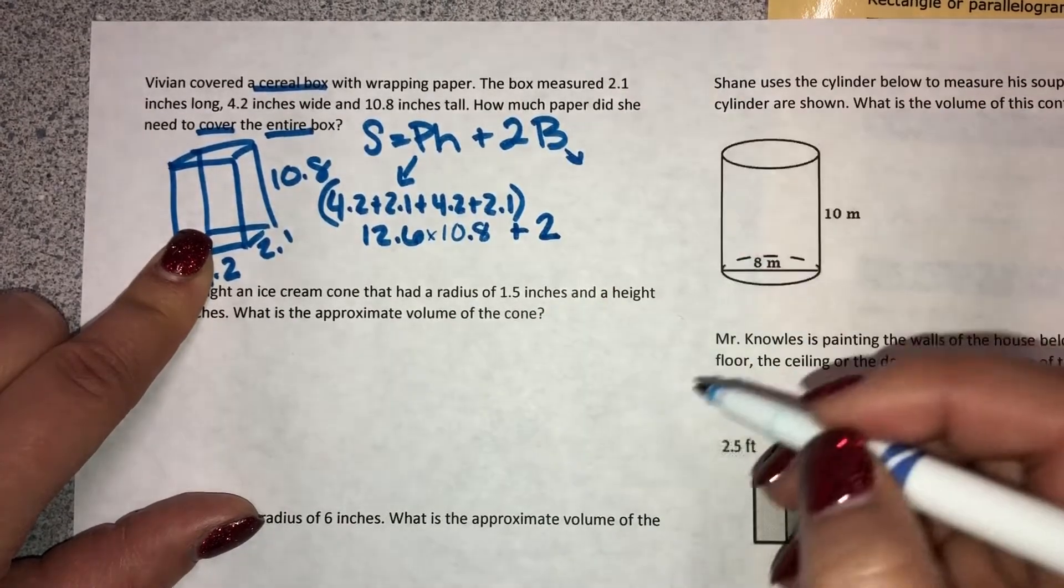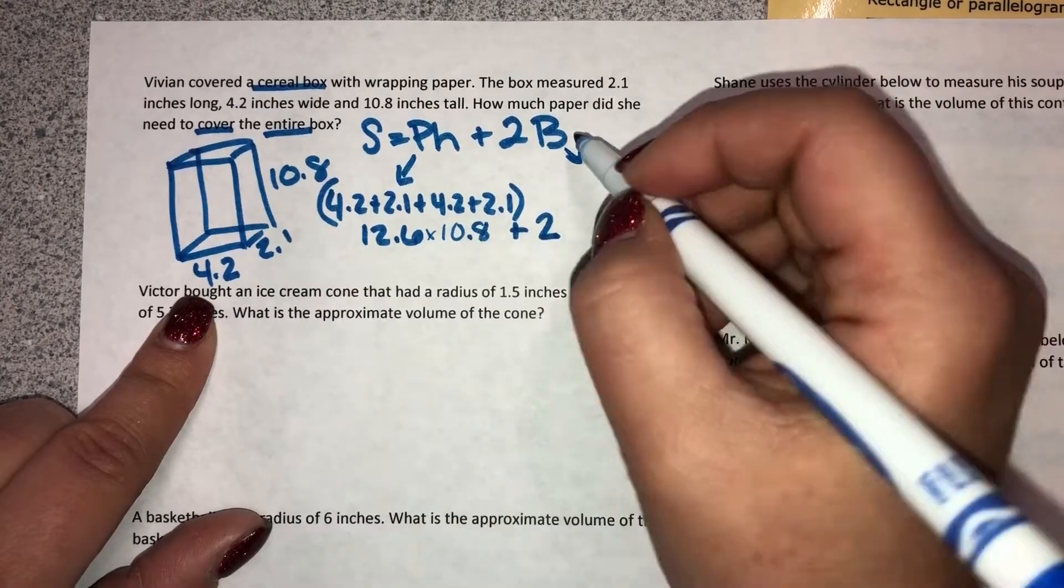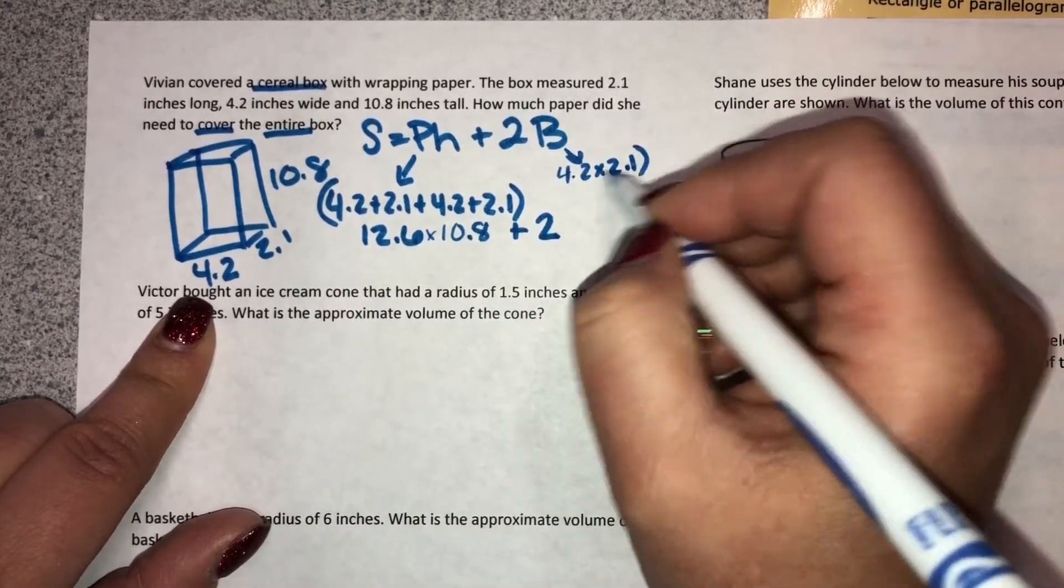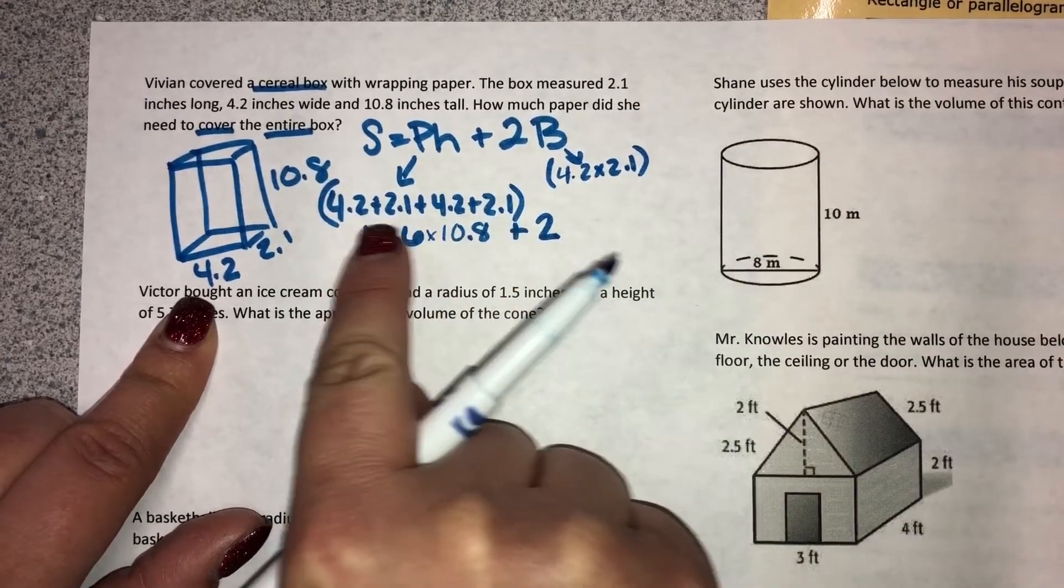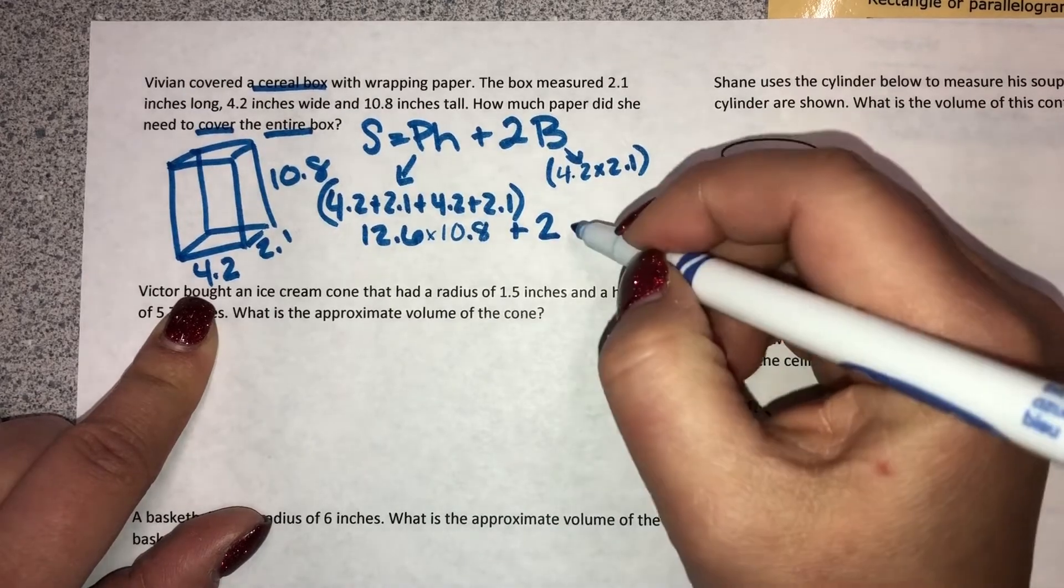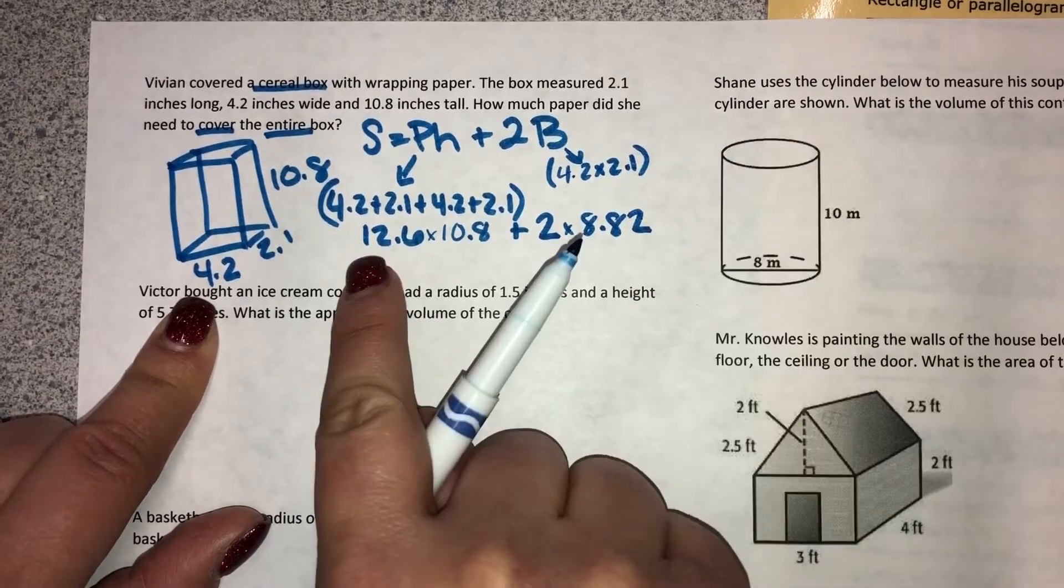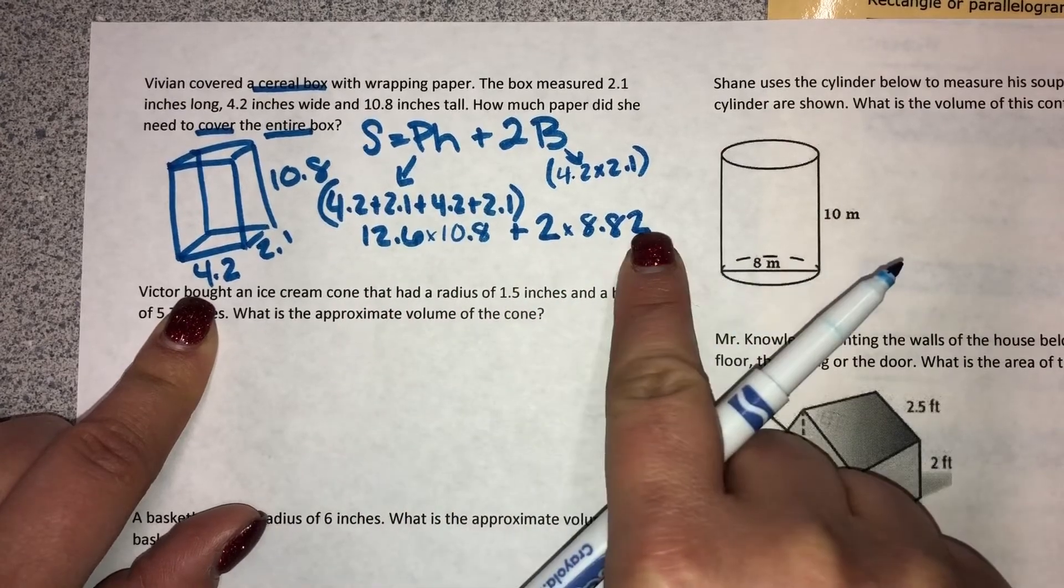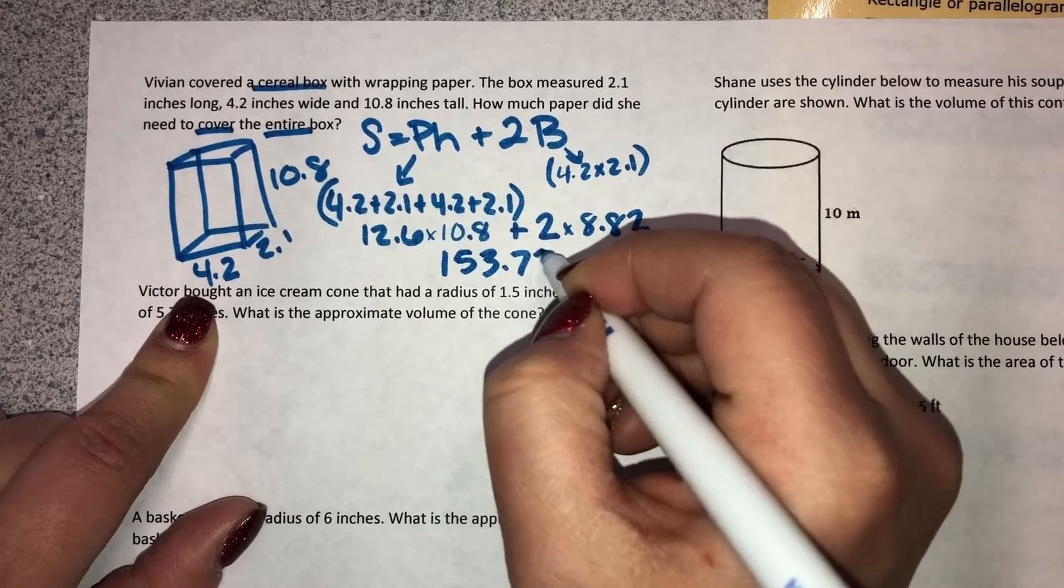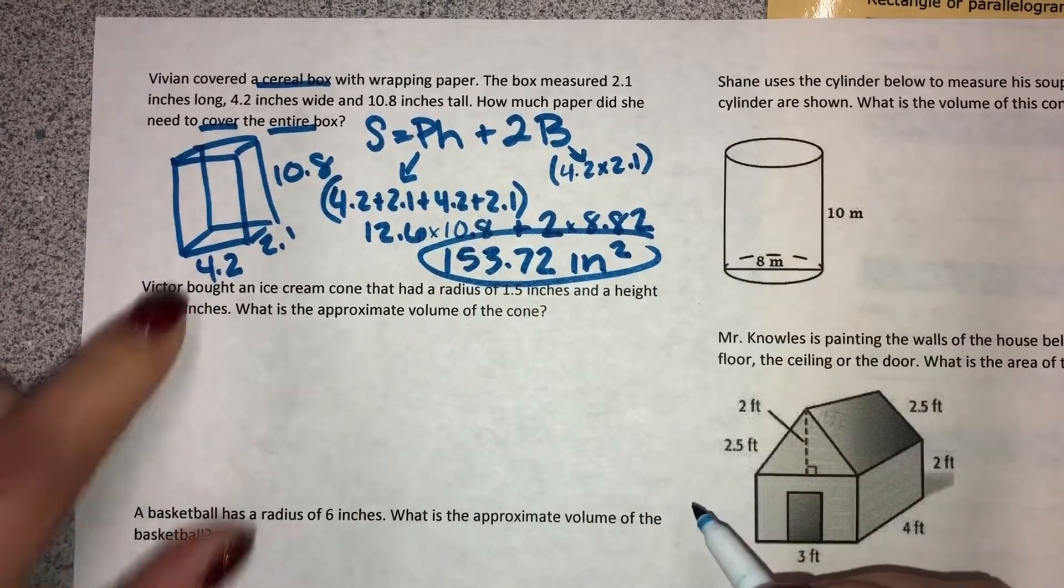Then I do plus 2B. Again, it's a capital letter, so I have to calculate that. So B would be 4.2 times 2.1. Whatever I added together to get the perimeter, those are the same numbers I'm going to multiply to get the area. So that would equal 8.82. Then you can punch this whole thing in your calculator just like you see it and get 153.72 inches squared because it's surface area.